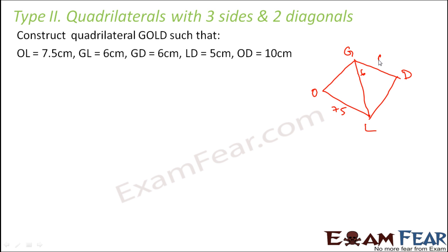GD, that is this length is given as 6 again, LD is this length which is given as 5 and OD which is again the diagonal is given as 10. So both the diagonals are given and 3 sides are given. So OG is the side which is not mentioned. So in this case how do we go about it.